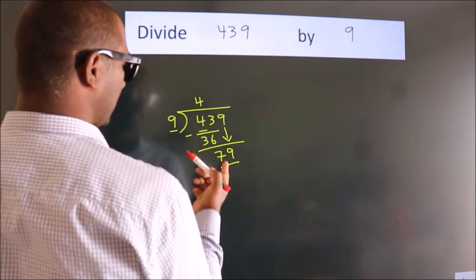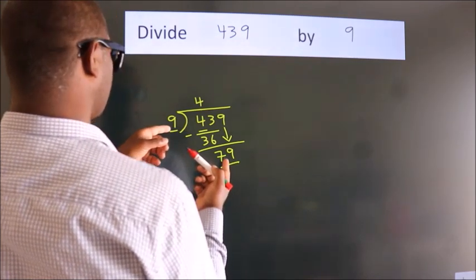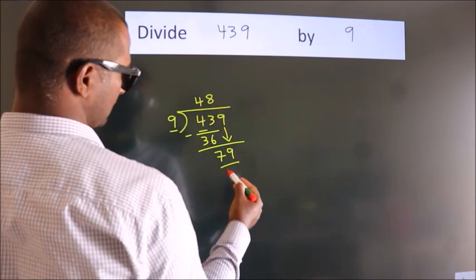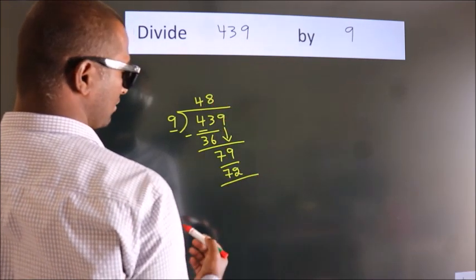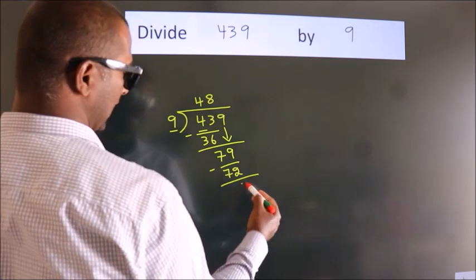A number close to 79 in the 9 table is 9 eights, 72. Now we subtract. We get 7.